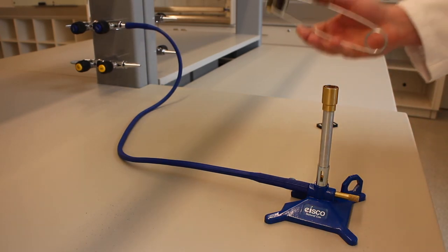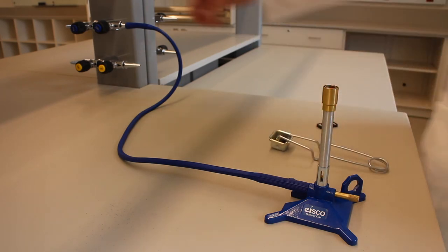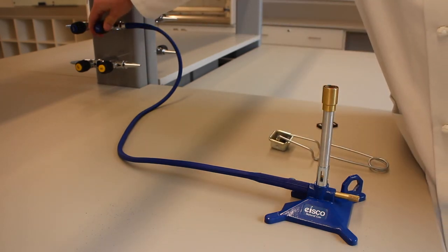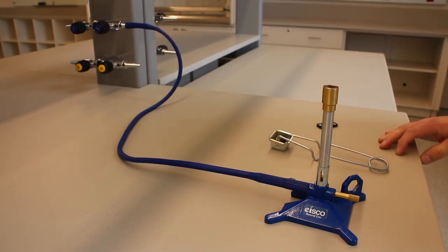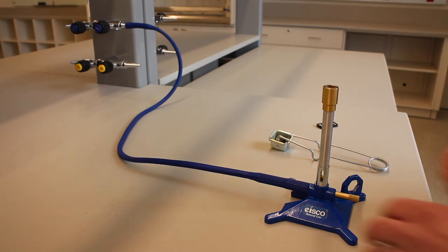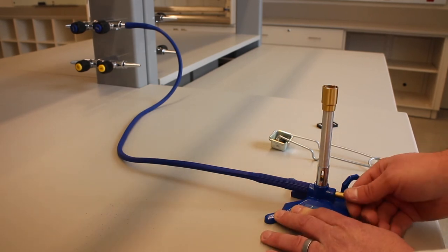If it does not ignite quickly, turn off the main gas flow and let the released gas dissipate before trying to light the burner again. Also ensure that the gas knob on the bottom of the burner is not closed since this will stop gas from flowing into the burner and prevent any attempts at lighting it.